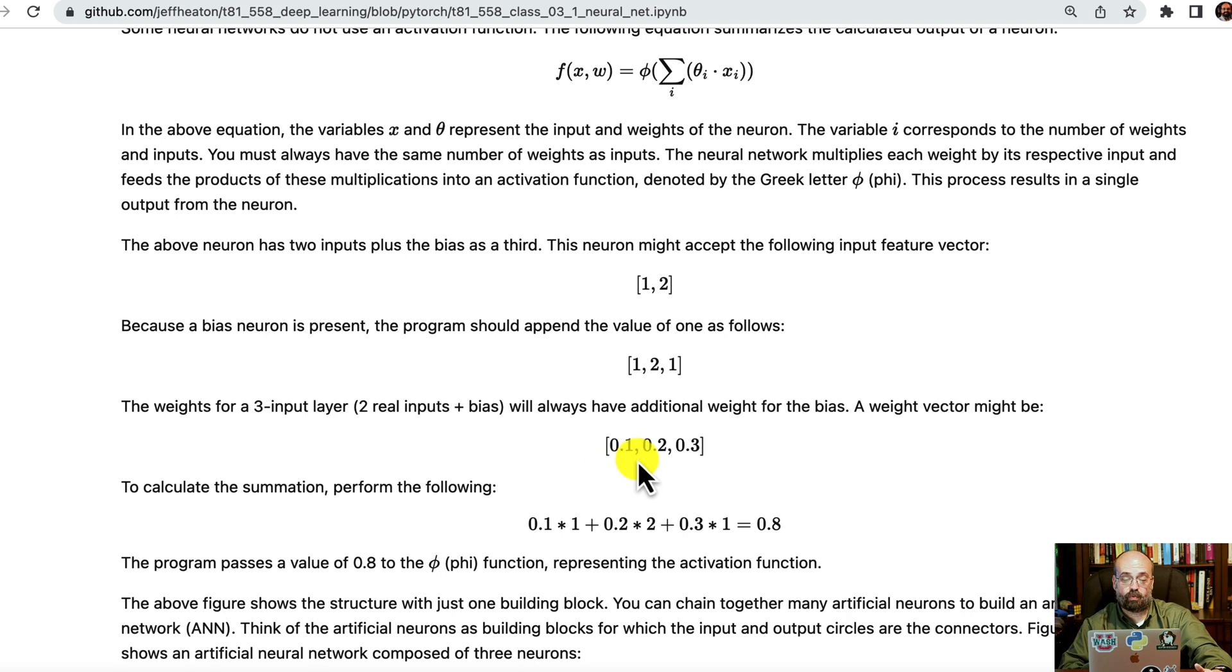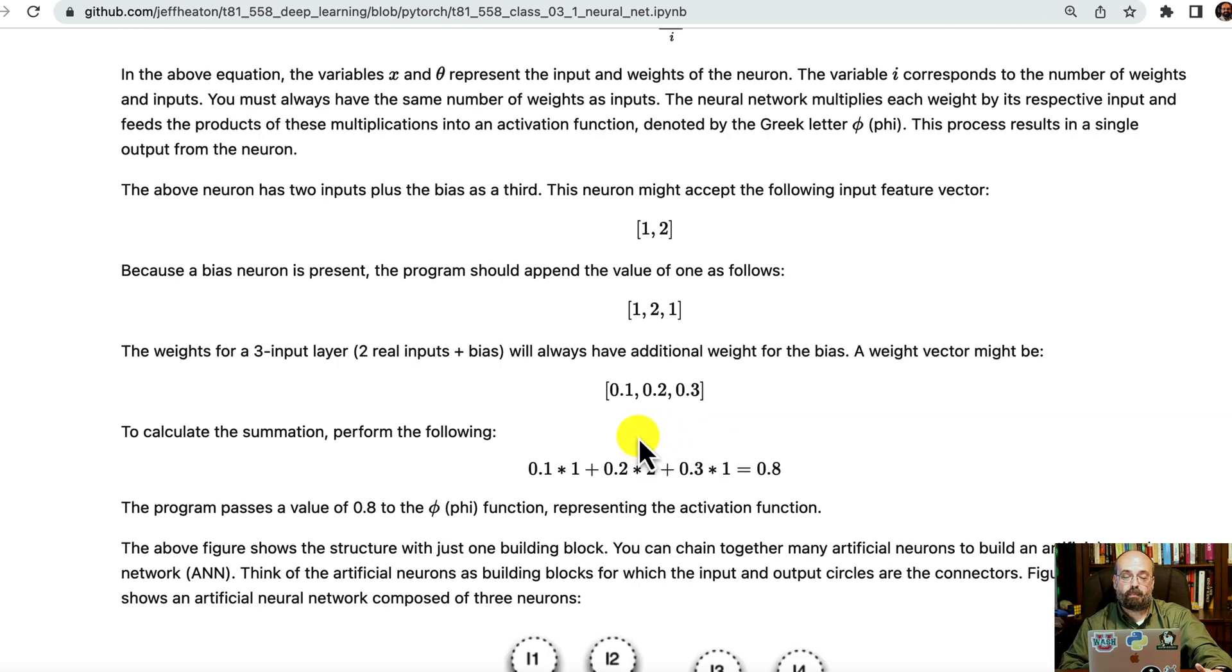So consider if you were passing one and two in, you would append a one onto the end of that vector to represent the bias. The bias is always one. I've never seen a case where you would make it not. We're going to use these weights. So 0.1 is the first weight, 0.2 is the second weight, 0.3 is the bias value, the intercept. We multiply these inputs by each of these. So 0.1 times 1, 0.2 times 2. The bias is really meant to be added, just like y equals mx plus k.